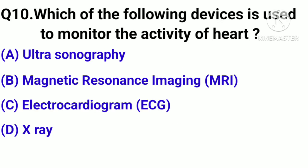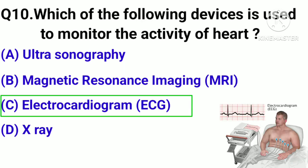Question number 10. Which of the following devices is used to monitor the activity of the heart? Option A: Ultrasonography. Option B: Magnetic resonance imaging. Option C: Electrocardiogram. Option D: X-ray. Correct answer: Option C, Electrocardiogram.